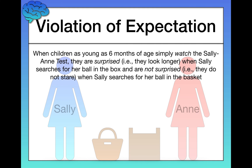In comes the violation of expectation method, as we saw before when talking about object permanence. When children as young as six months of age — not four years of age — simply watch the Sally Ann test, they reveal an understanding of Theory of Mind. They look longer, surprised, when Sally searches for her ball in the box. But they don't stare or look very long at all — they get bored — when Sally searches for her ball in the basket. Using the violation of expectation paradigm, we reveal that children understand Theory of Mind. They understand that other people can have different thoughts, preferences, and beliefs than they do, as young as six months of age and possibly sooner.